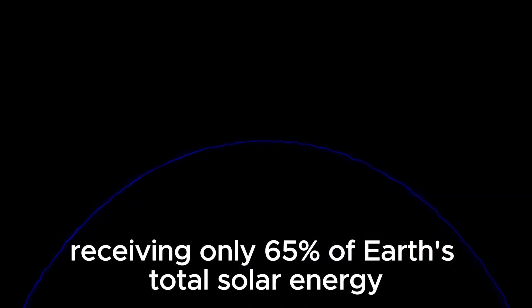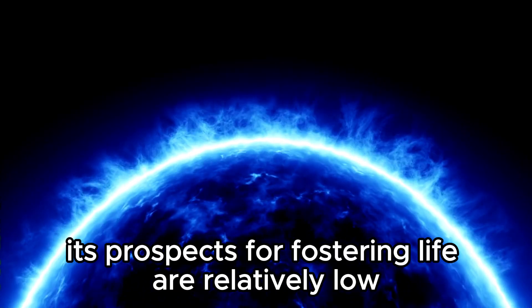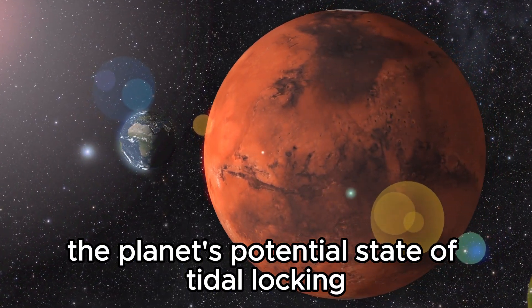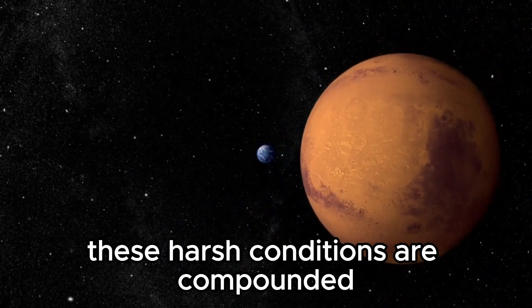With Proxima b receiving only 65% of Earth's total solar energy, its prospects for fostering life are relatively low. The planet's potential state of tidal locking creates extreme temperature differentials between its scorching day and freezing night.